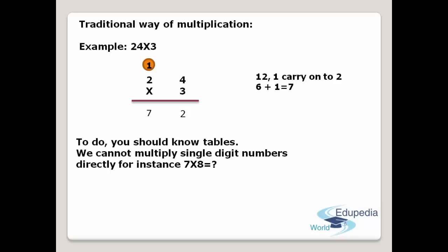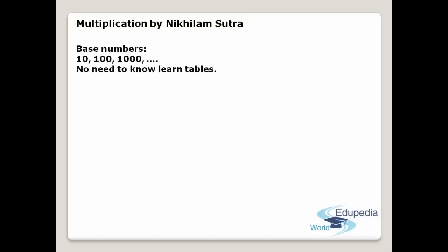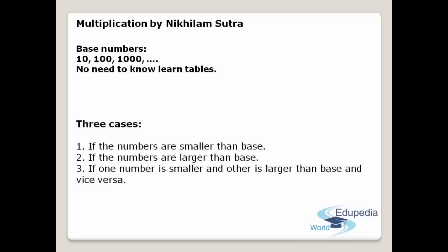Before starting, let us know some basic things. The first thing to keep in mind is you should know what base numbers are. The base numbers are 10, 100, 1000, and so on. The other important thing is there is no need to learn tables. In order to multiply numbers using Nikhilam Sutra, we follow three cases.